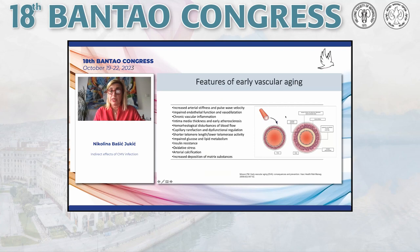The components of early vascular aging include increased arterial stiffness and pulse wave velocity, impaired endothelial function and vasodilatation, chronic inflammation, intima-media thickness and early arteriosclerosis, disturbances of blood flow, capillary rarefaction, and dysfunctional regulation. Additionally, there is shortening of telomere length, impaired glucose and lipid metabolism, insulin resistance, oxidative stress, calcifications, and increased deposition of matrix substances.